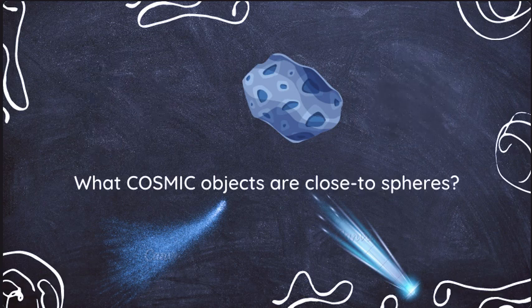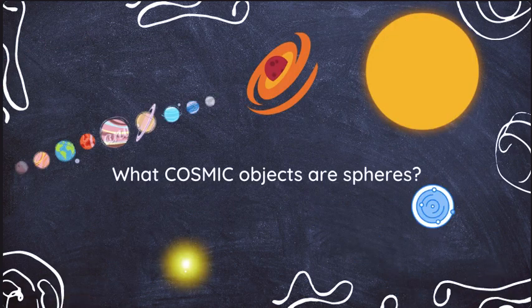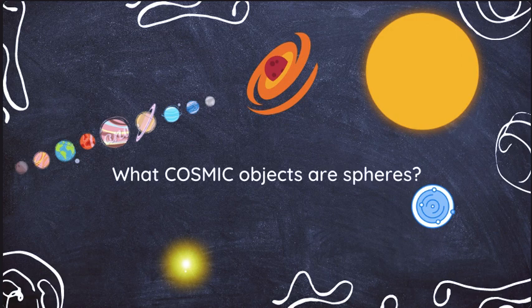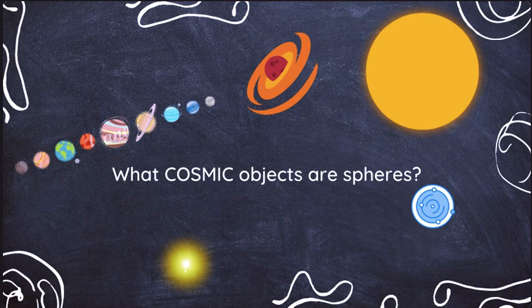But bigger objects like the sun, planets including earth, the solar system, stars, black holes, and the universe itself are actually perfect spheres.